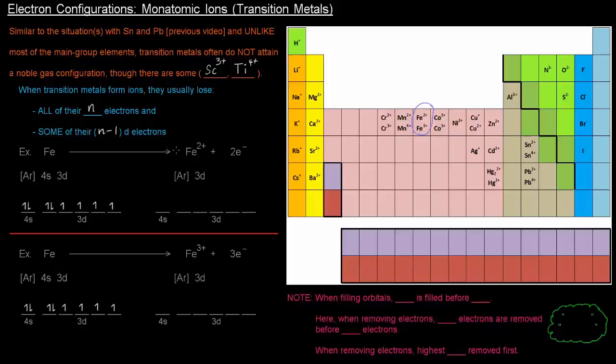Fe can go to Fe2+, plus 2 electrons. Iron's electron configuration is basically from all the way up to argon, and then 4s2 3d6, and its orbital diagram is shown here. 4s2 is filled, 3d has 6 electrons in it.